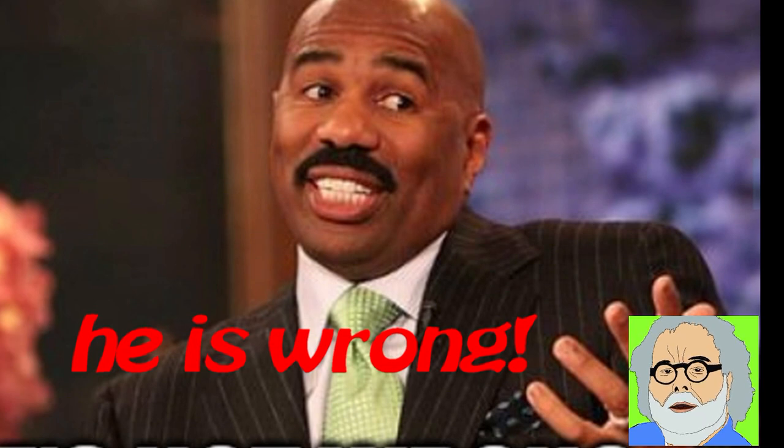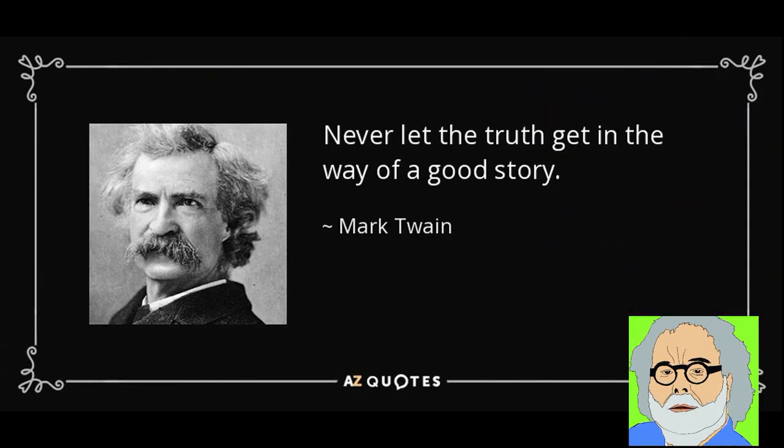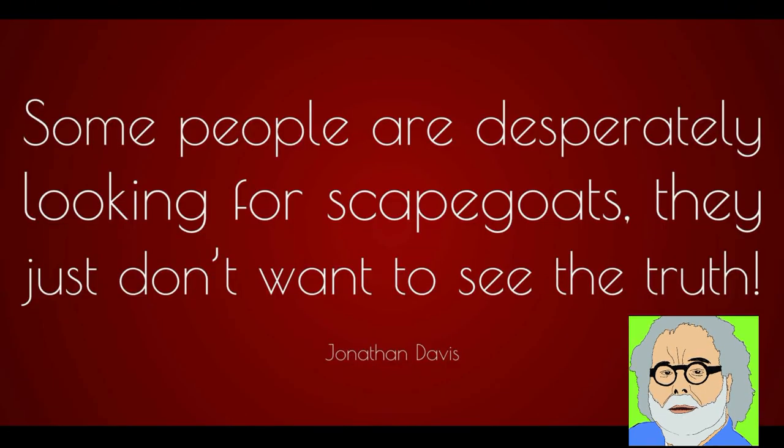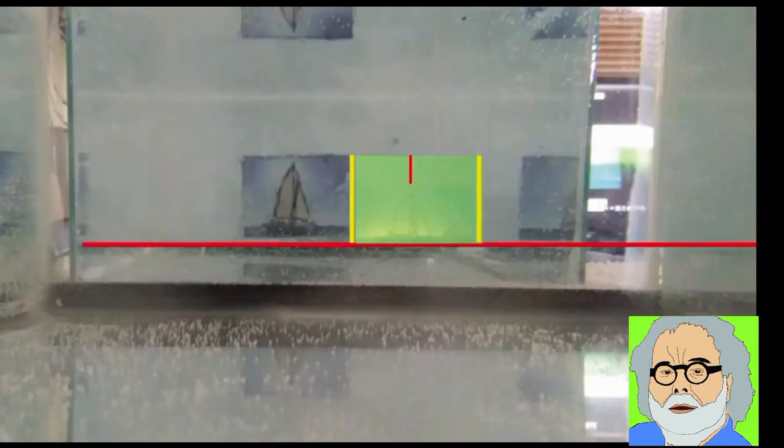However, there is no flat earther who let some research ruin a good story. So, he desperately looks for some evidence that downward refraction makes objects appear lower than in reality. He comes up with the fact that the top of the sailboat appears lower in the refracted image than in the control image.